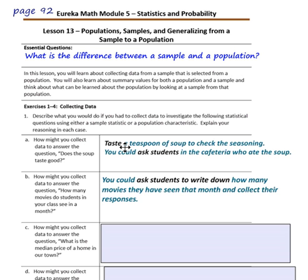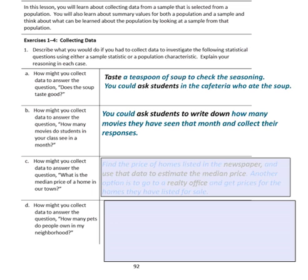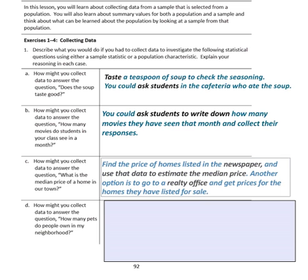Question C: How might you collect data to answer the question, 'What is the median price of a home in your town?' You could find the price of homes listed in the newspaper and use that data to estimate the median price. Another option is to go to a realty office and get prices for the homes they have listed for sale.